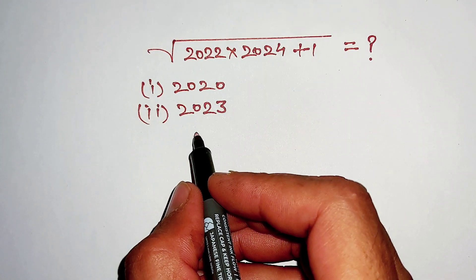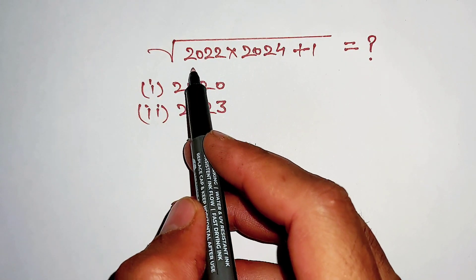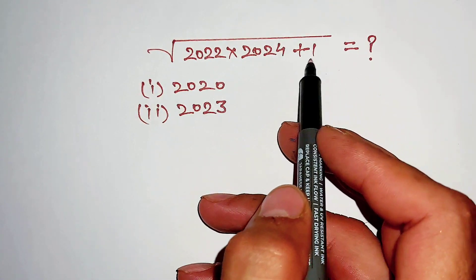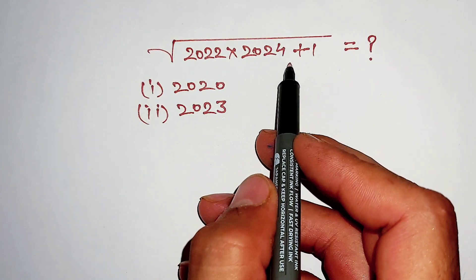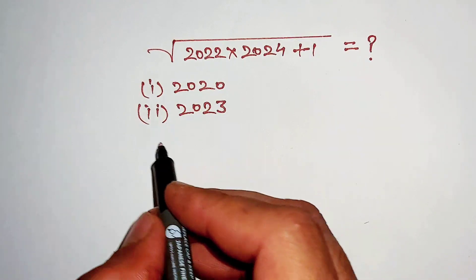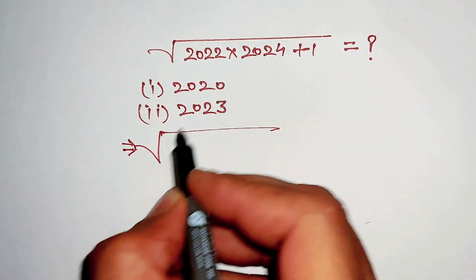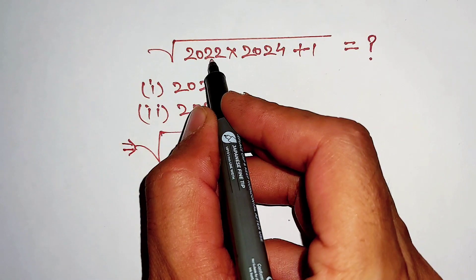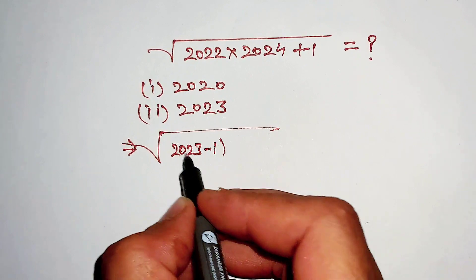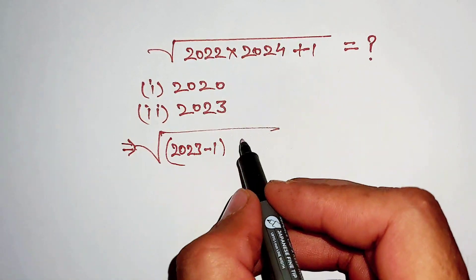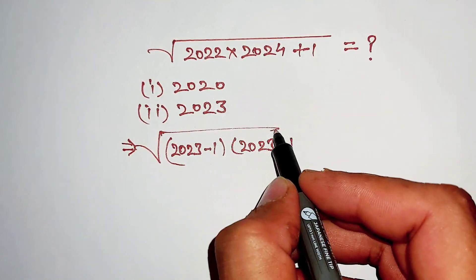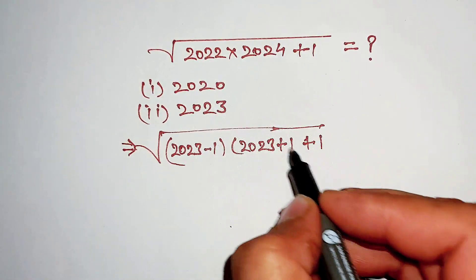Hello dosto, the question is square root of 2022 multiply 2024 plus 1, and we want to solve this expression. Is it 2020 or is it 2023? Let's find out. First of all, we can rewrite this 2022 as 2023 minus 1, and this 2024 can be written as 2023 plus 1, and here same it is plus 1.